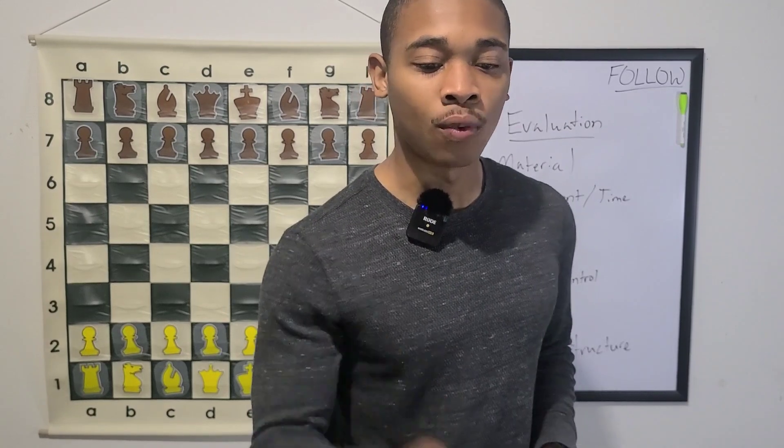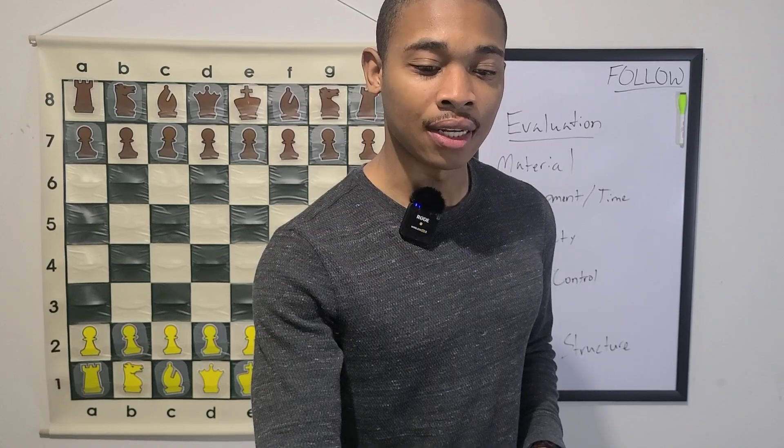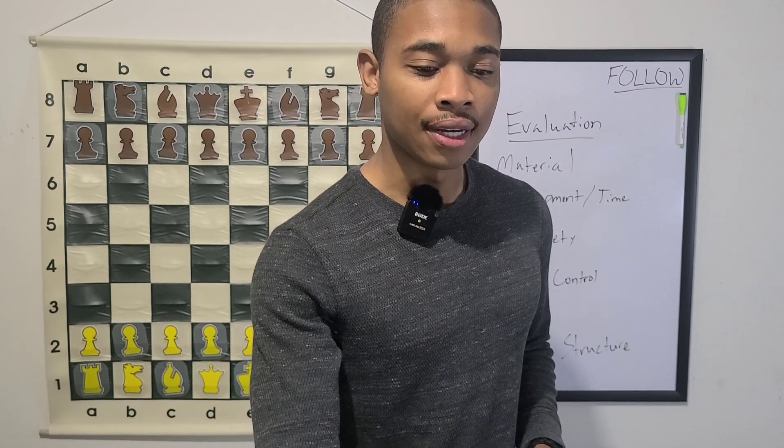And today, we are going to be discussing a game against white as Adolf Andersen and black as Jean Dufresne. And apparently, this was in Berlin. And the date supposedly was 1852.